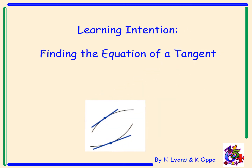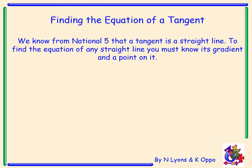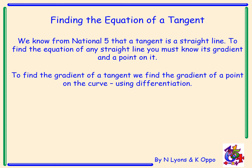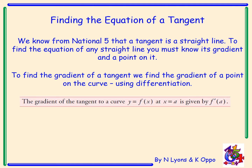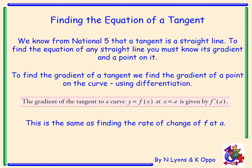Today we are going to be finding the equation of a tangent. We know from National 5 that a tangent is a straight line. To find the equation of any straight line you must know its gradient and a point on it. To find the gradient of a tangent we need to find the gradient of a point on the curve, and we do this using differentiation. The gradient of a tangent to a curve y equals f(x) at x equals a is given by f dashed of a. This is the same as finding the rate of change of f at a.